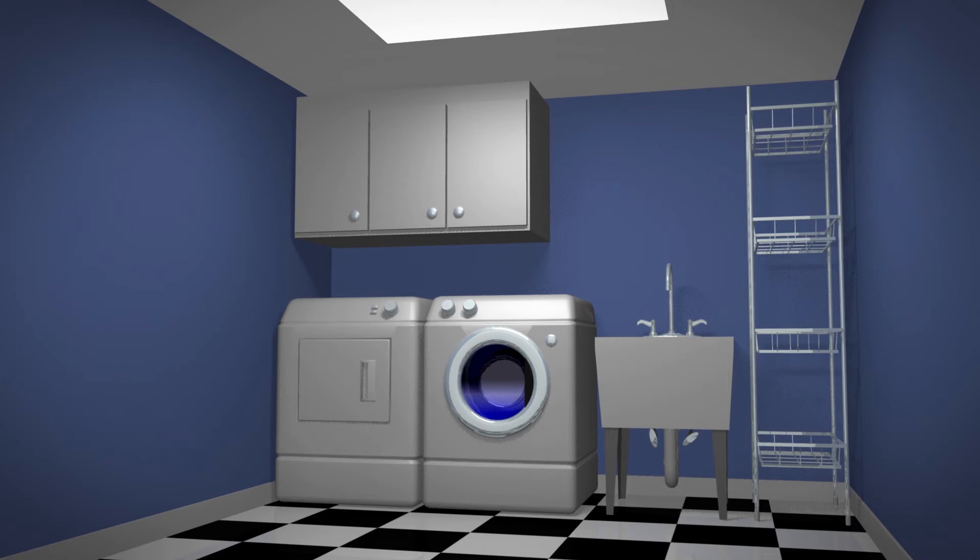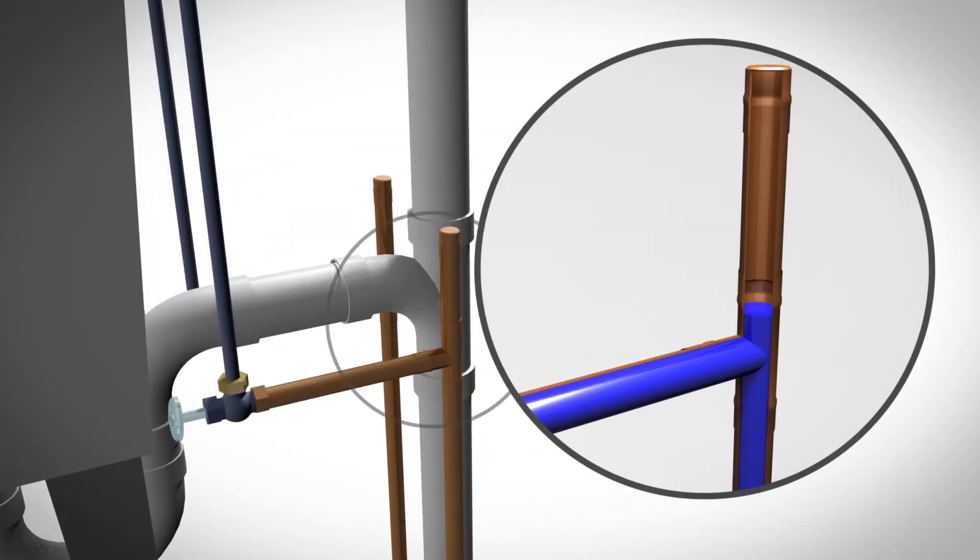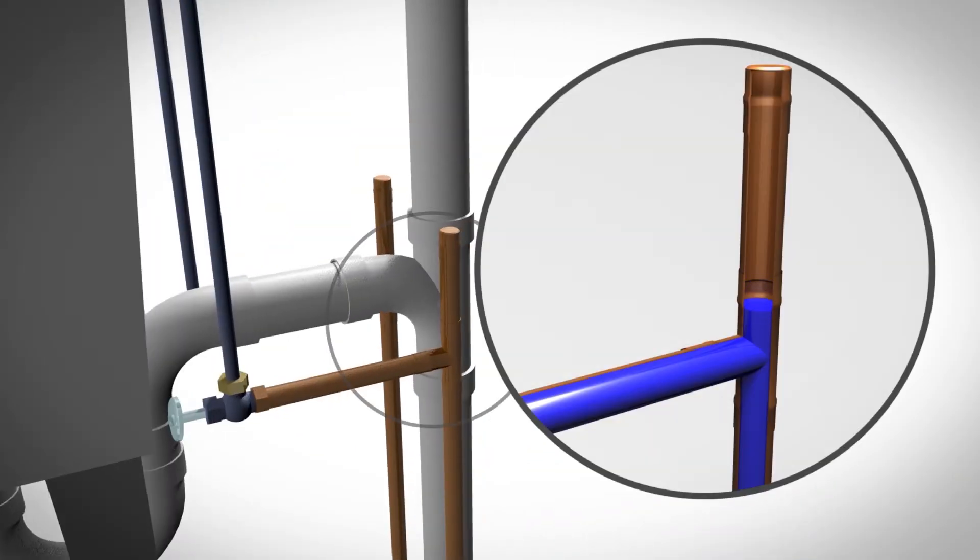How is water hammer avoided? Plumbing lines have air chambers that act as shock absorbers when the water is quickly shut off. Air chambers soften the blow, preventing water hammer.